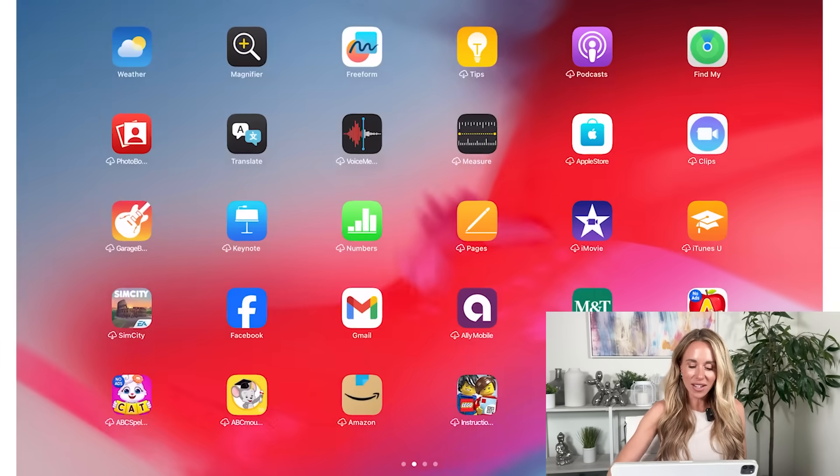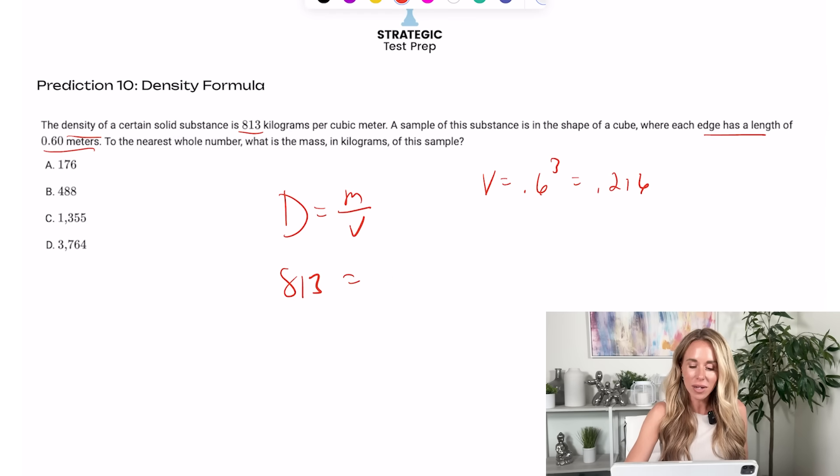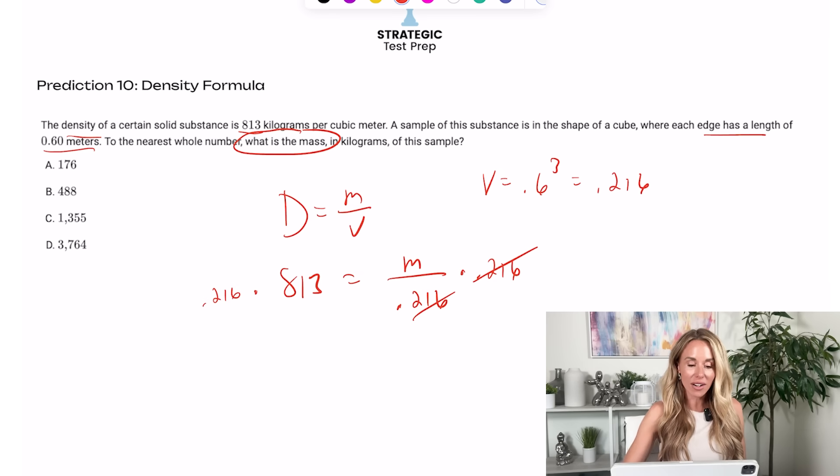0.216. So I'm going to basically set that for the V and I'm solving for M because they said, what is the mass? So we just have to multiply both sides by 0.216. And then we'll get our answer. So it looks like it's going to be 176. I don't even need to put that in Desmos because 488 is more than half. So that would be 0.5 something. That doesn't make any sense. It's got to be the smallest number that they give you.